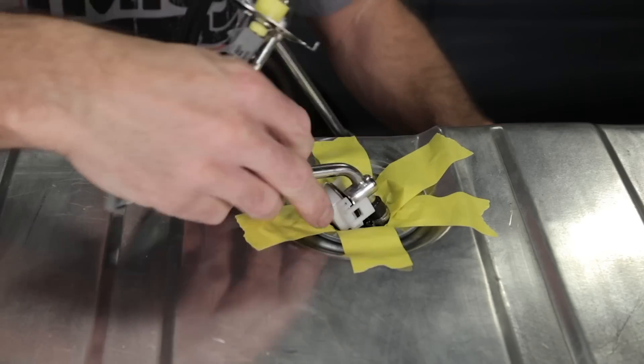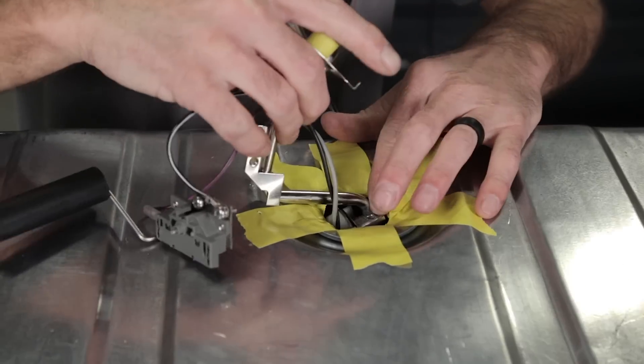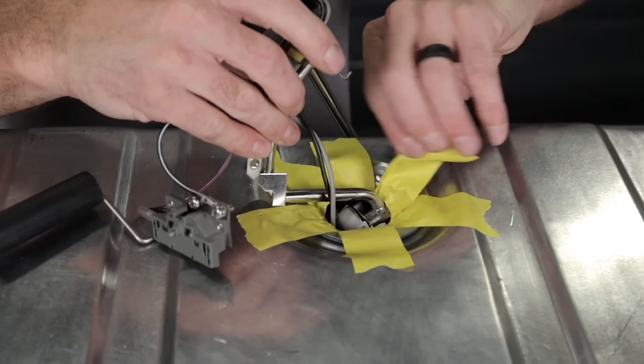Continue feeding the pump assembly into the fuel tank until you get it down to the fuel sending mounting location. Now we can remove the tape.